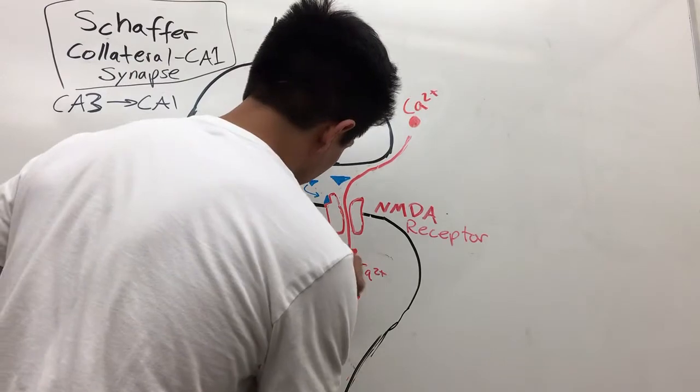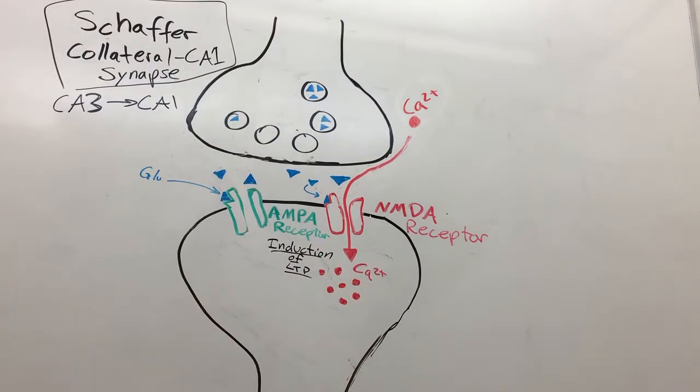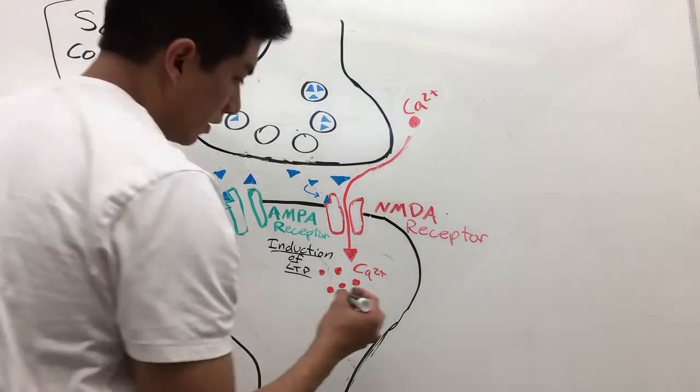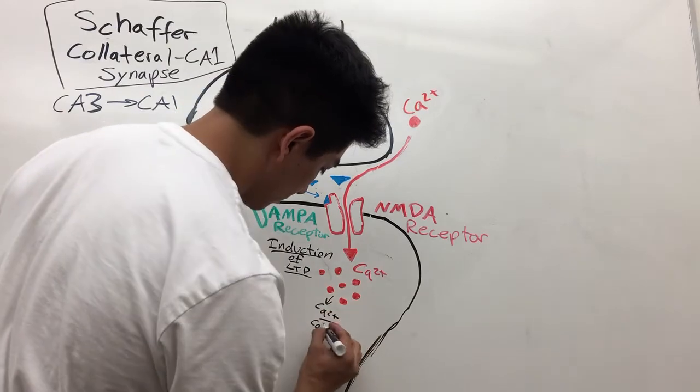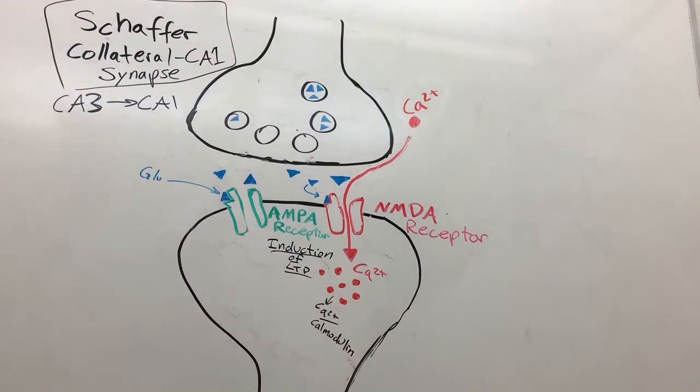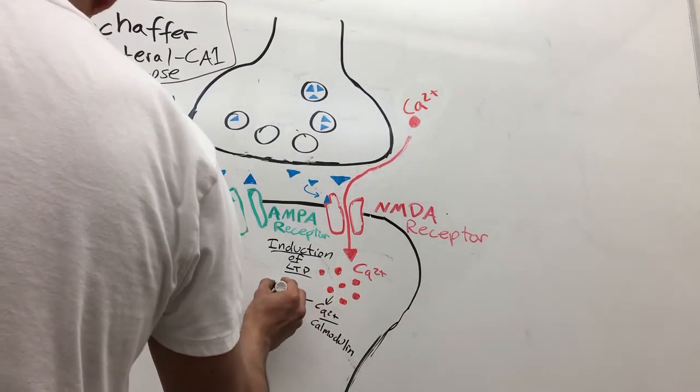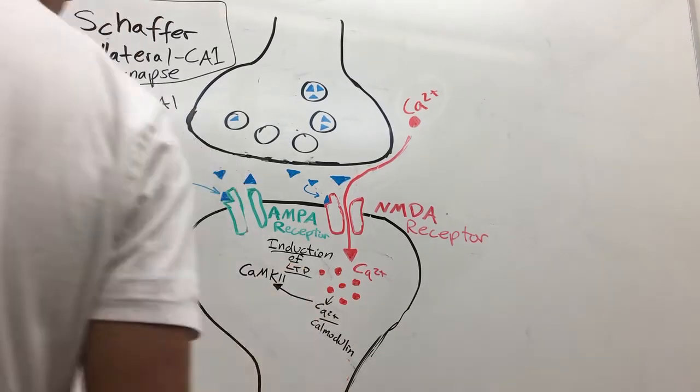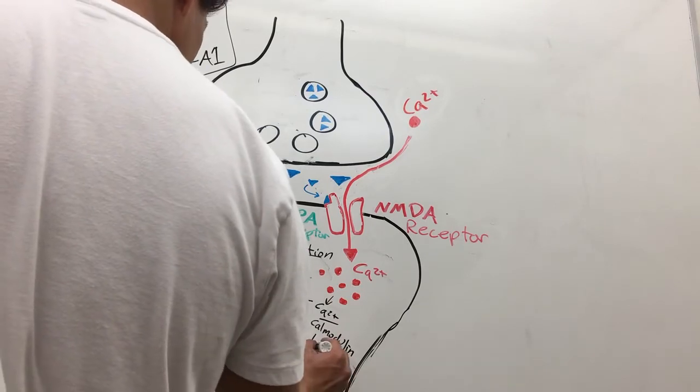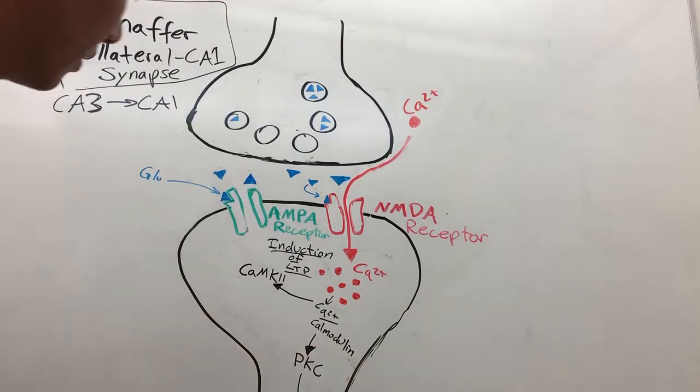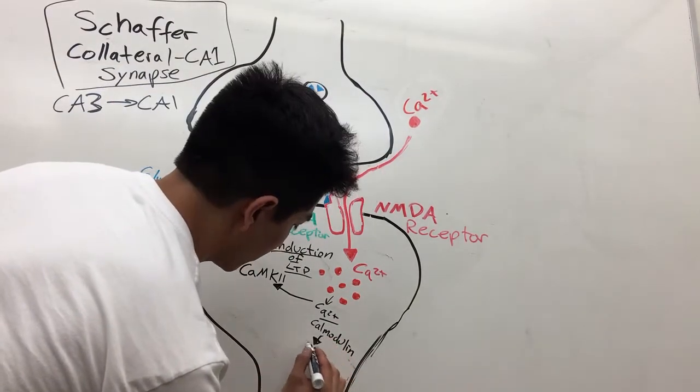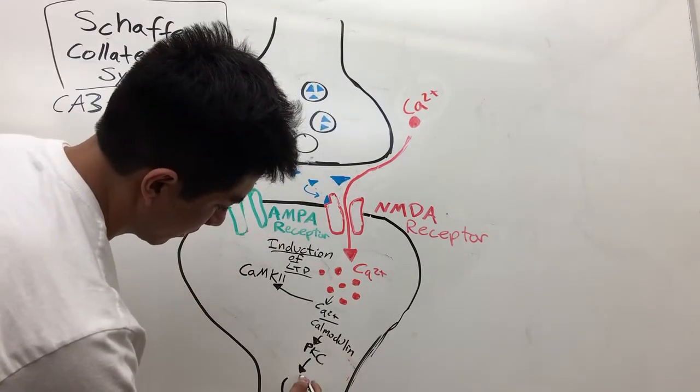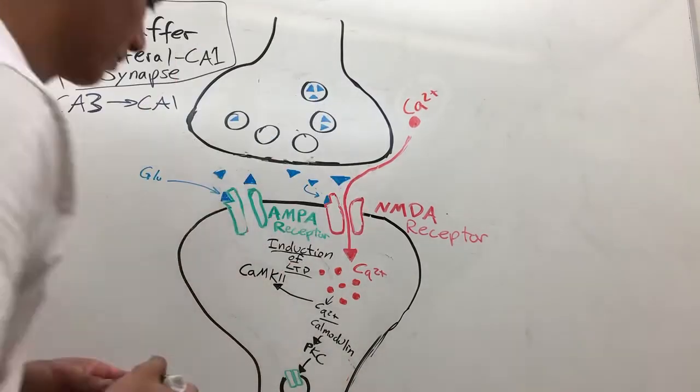Now we have this phase called the induction of LTP, and this is where the second messenger cascades come into play with calcium coming in. We have calcium and calmodulin, and that is going to go to CaMKinase 2 or it can go to PKC.